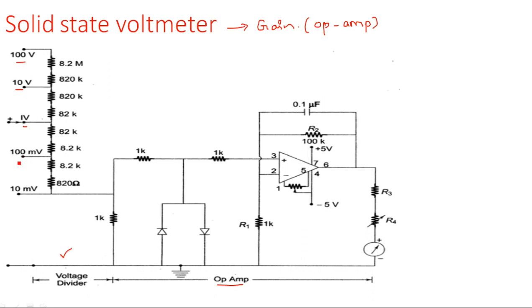The voltage ranges are 100 volts, 10 volts, 1 volt, 100 millivolts, and 10 millivolts — each a multiplication of the previous by 10. As the voltage increases, the multiplier resistor value also increases in multiples of 10. So the resistor values are 820 ohms, 8.2 kilohms, 82 kilohms, 820 kilohms, and 8.2 megaohms.